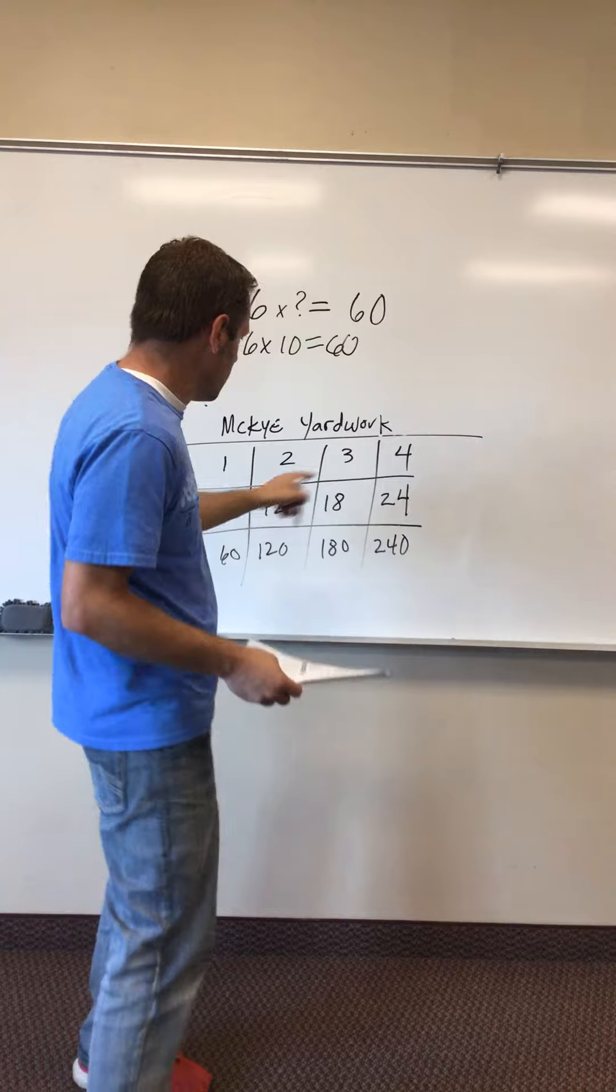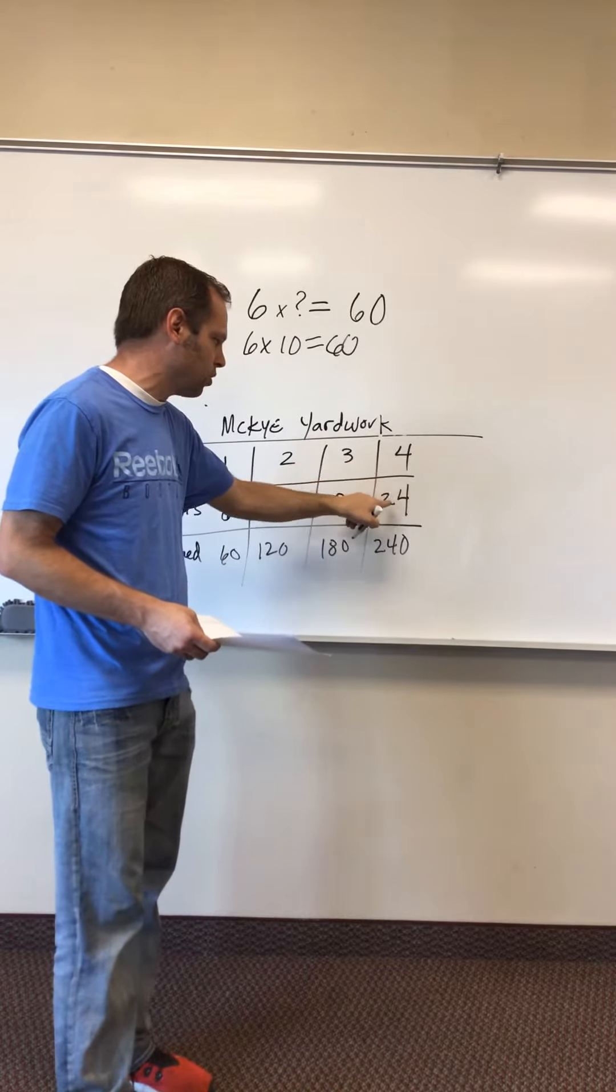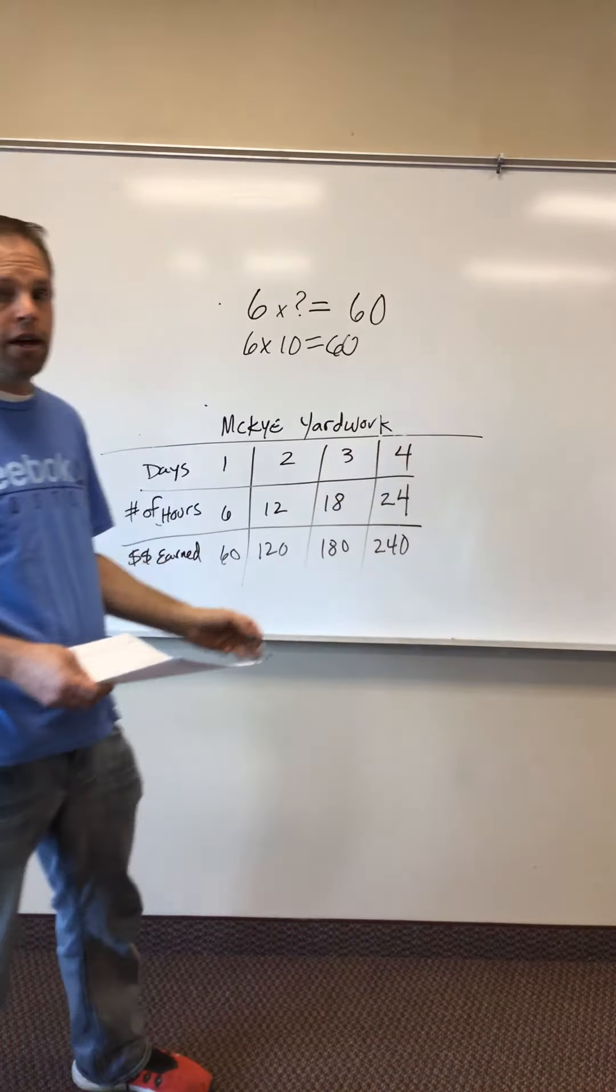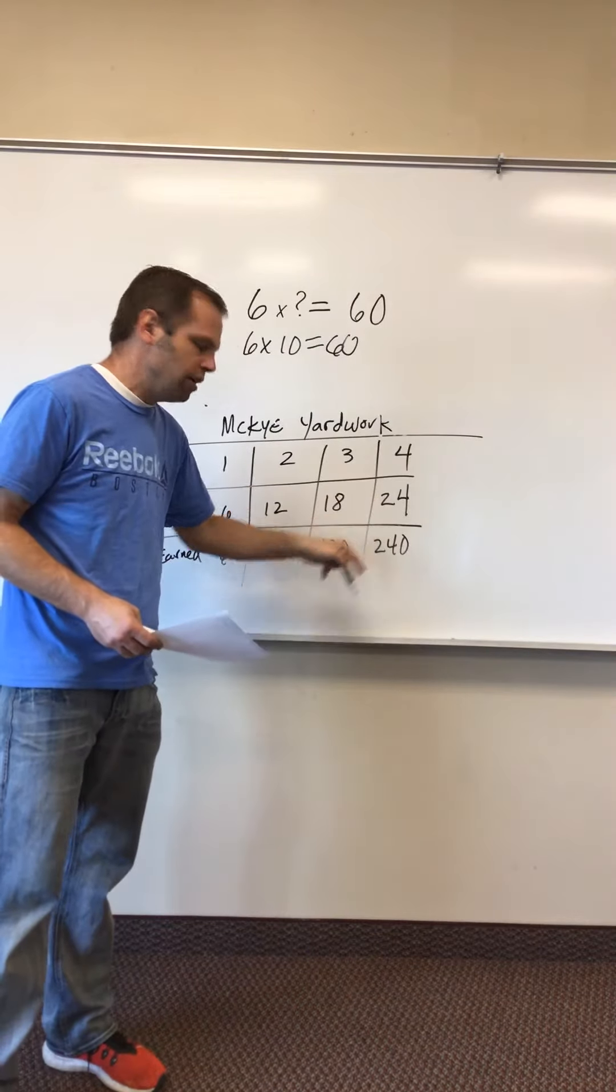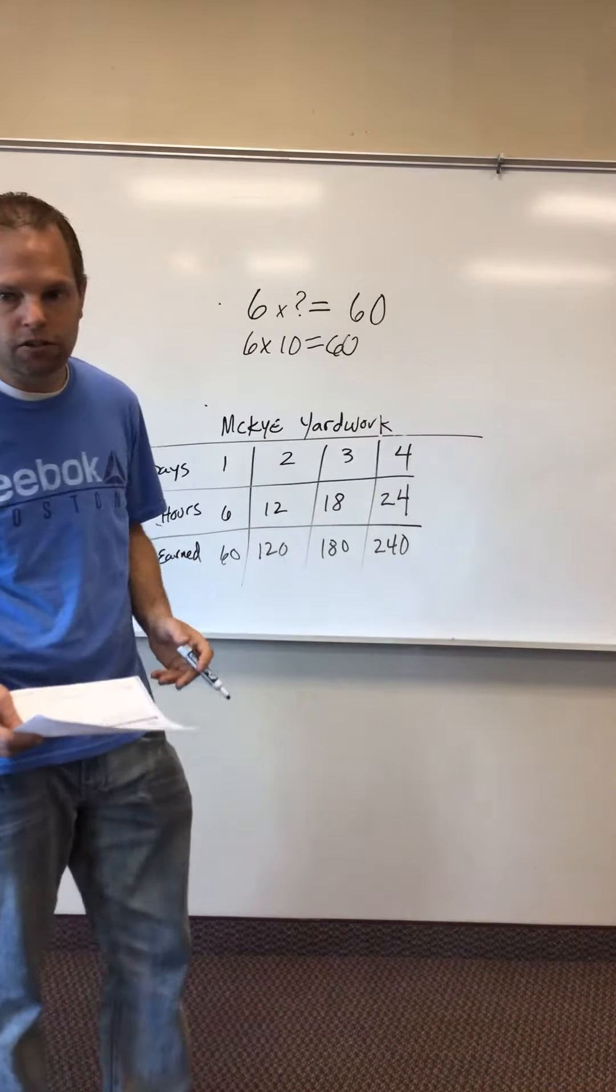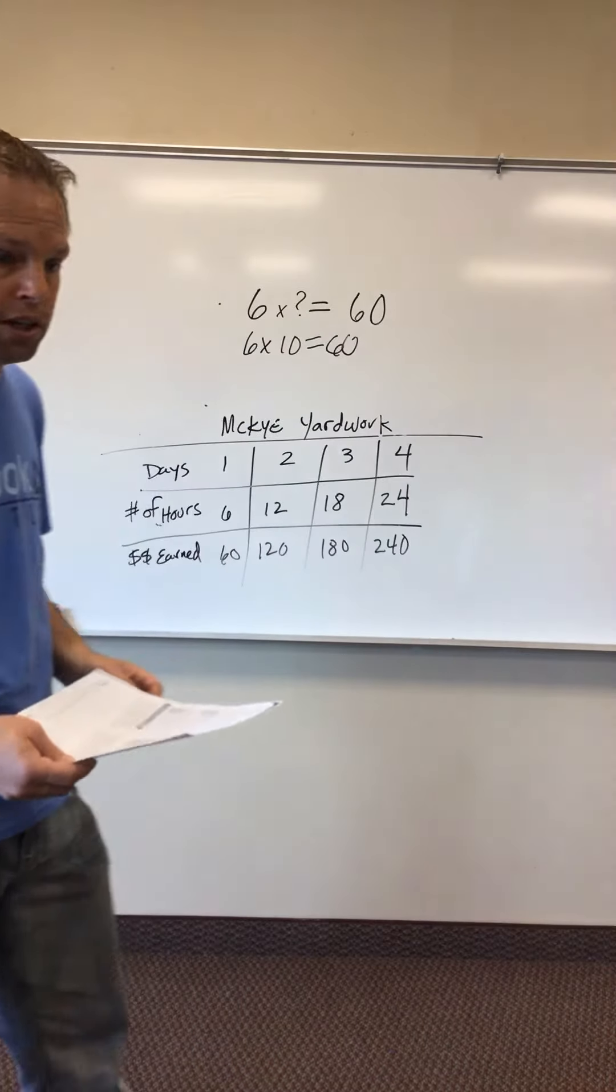Okay, let's look and see if that's true. On day four, he's worked 24 hours. If I take $10 an hour, multiply it by 24, yes it's correct. That does give me $240.